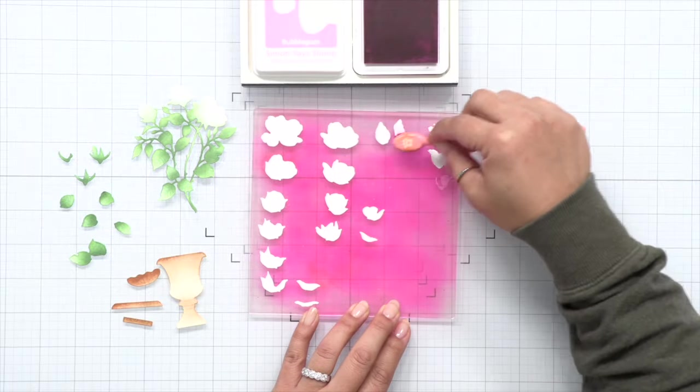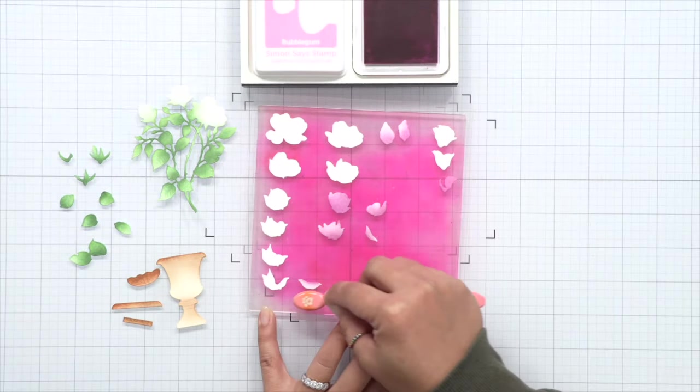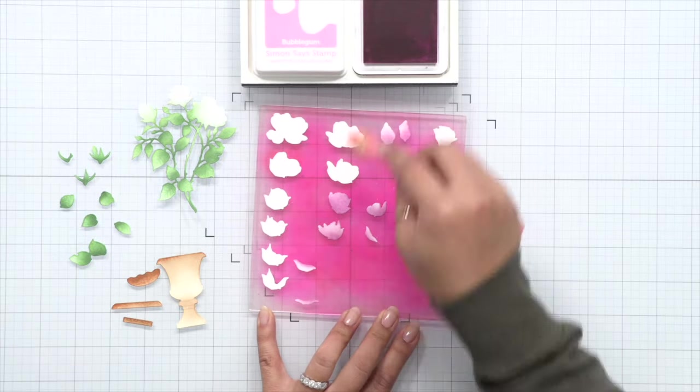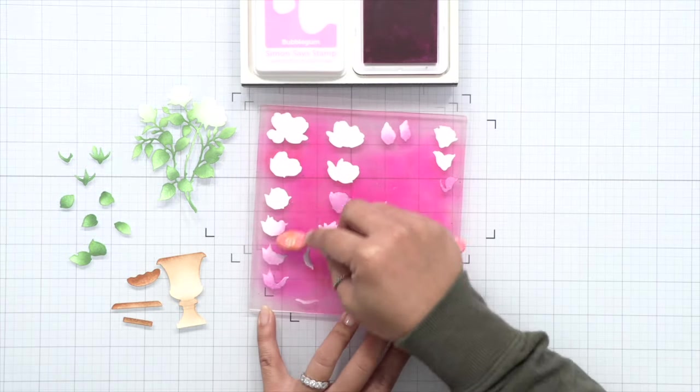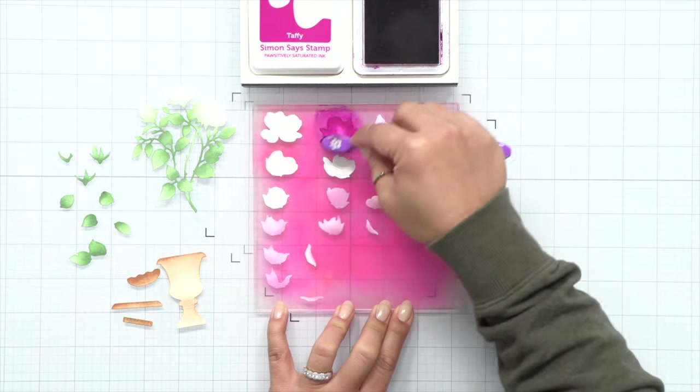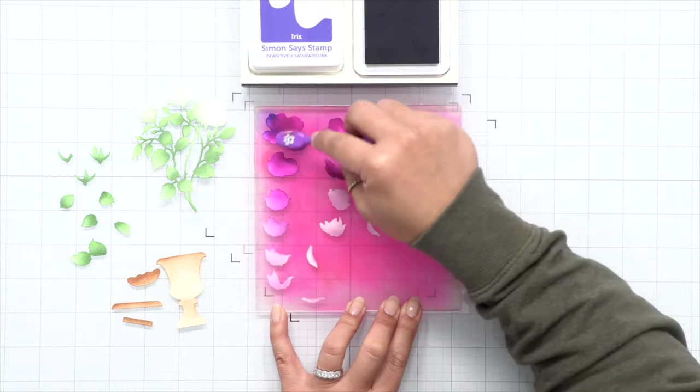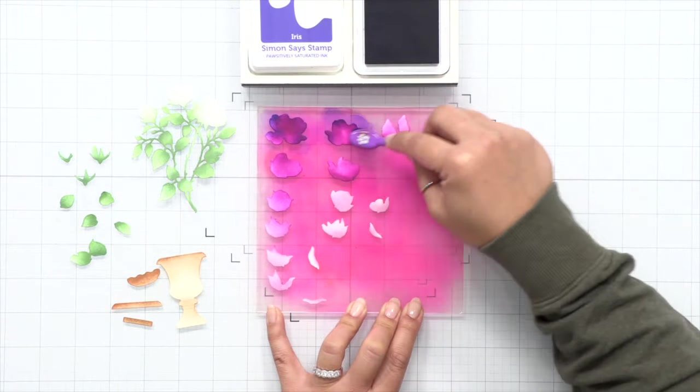So it's a lot of redundant work here. I'm just ink blending all of the pieces. I've got my flowers arranged from the largest to smallest pieces. The smallest pieces are going to be on top. So I'm ink blending those lighter. And for the pieces in the back, I'm ink blending those darker. So I'm using three different colors here: a light pink, darker pink, and a purple.